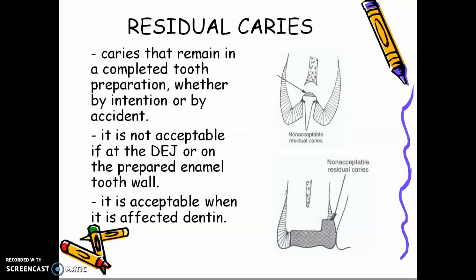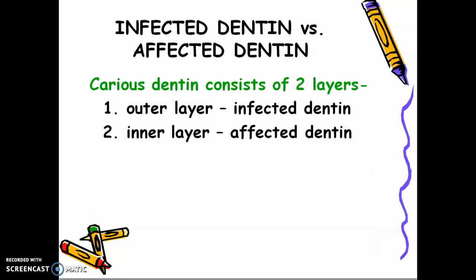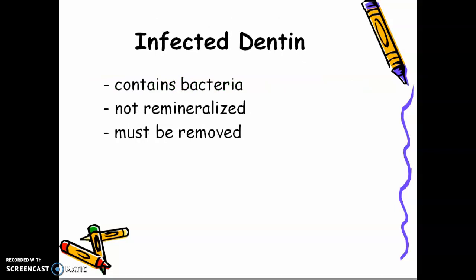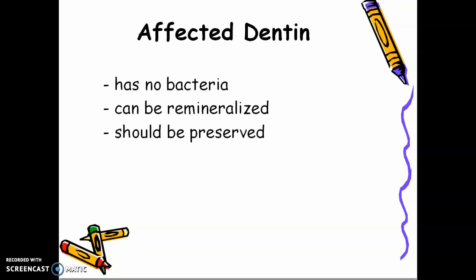Then we have residual caries — caries that remain in a completed tooth prep, whether by intention or by accident. It is not acceptable if it is at the DEJ or on the enamel. It is acceptable when it is affected dentine. Carious dentine consists of two layers: the outer layer is called infected dentine, and the inner layer is called affected dentine. Infected dentine contains bacteria, cannot remineralize, and must be removed. Affected dentine has no bacteria, can be remineralized, and should be preserved.